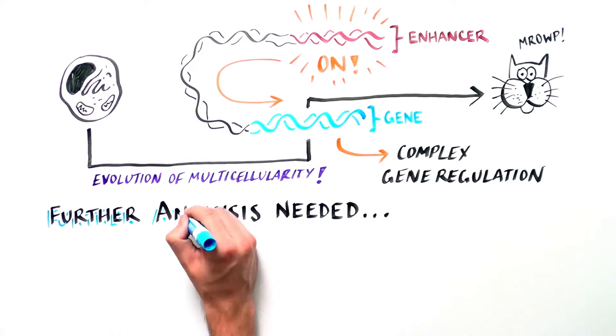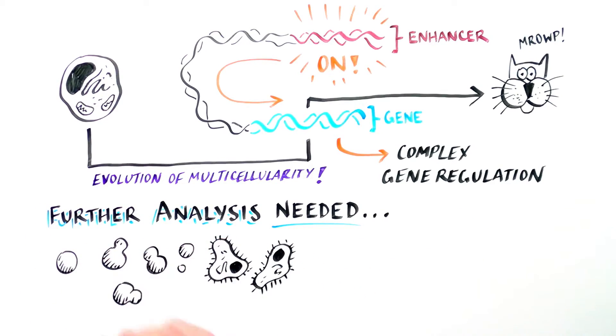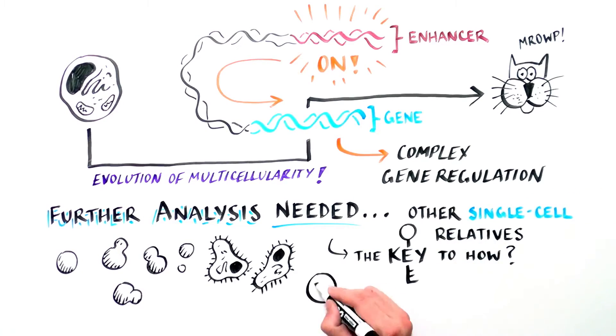Further analyses of other unicellular relatives of animals will be critical to comprehensively describe the evolution of the animal-specific regulatory genome, which will allow us to continue to unravel the mystery of how we as animals evolved from our unicellular ancestors.